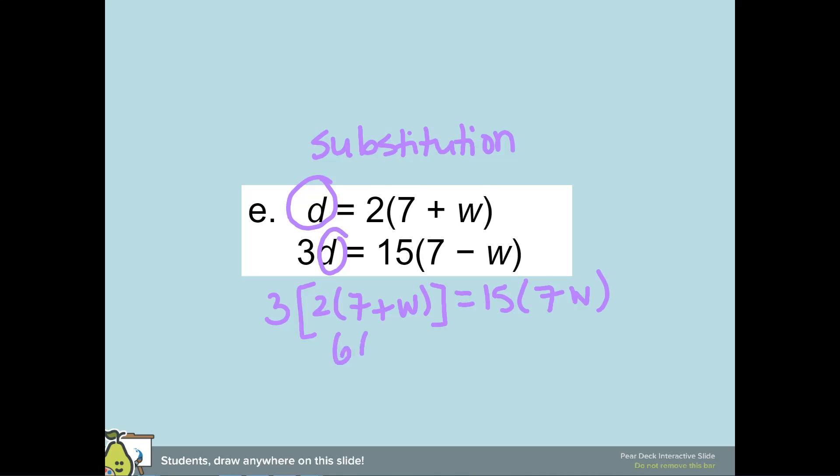That's going to distribute with the seven plus w is equal to 15 times seven minus w. So we end up getting 42 plus 6w is equal to